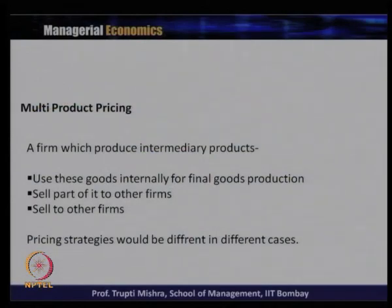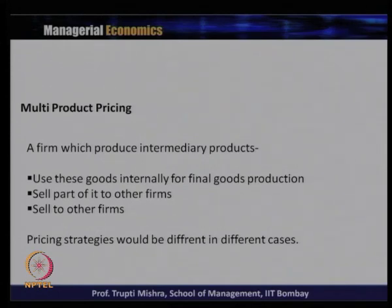If the firm only produces intermediary products, they may use these goods internally for final goods production, sell part of them to other firms, or sell all of them to other firms. The pricing strategy has to be different in all three cases — whether the goods are used for final products, whether part of them are sold, or the entire intermediary goods are sold in the market.